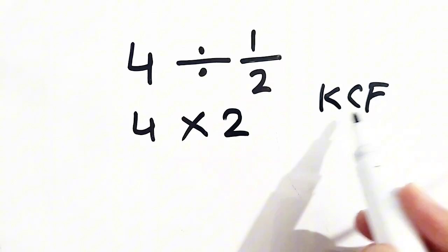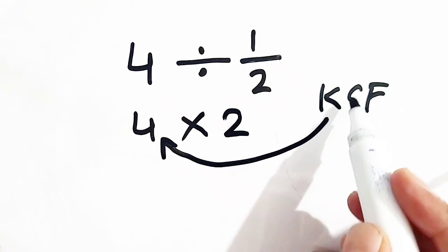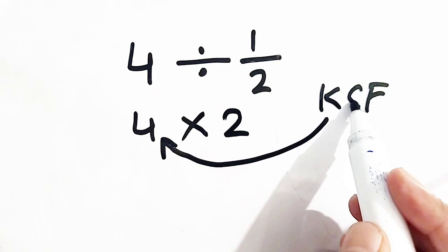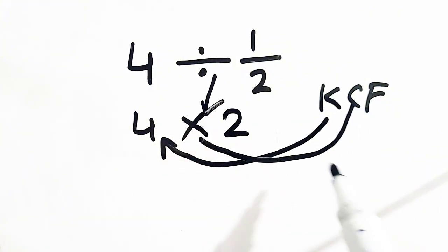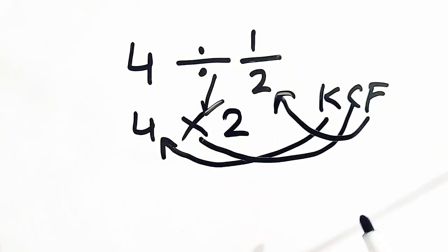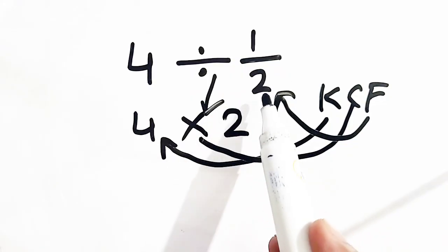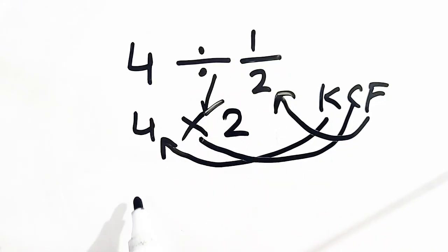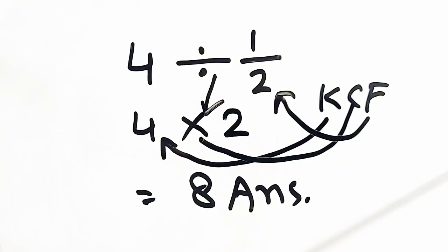K means keep it, C means change it — divide is changed into multiplication — and F means flip it. We have flipped 1 by 2 and it becomes 2. So 4 times 2 is equal to 8, which is our answer.